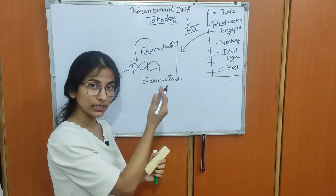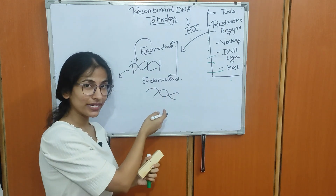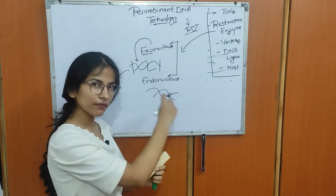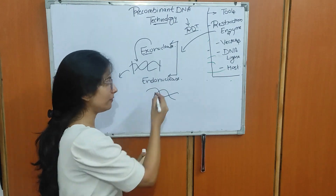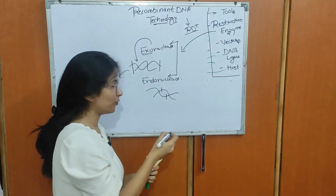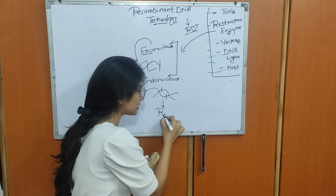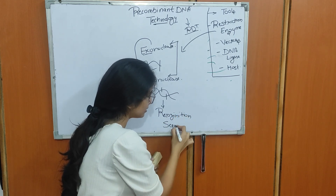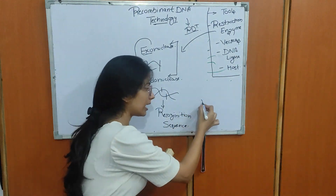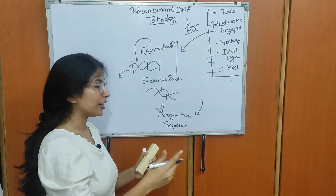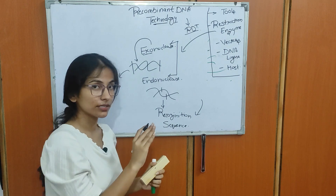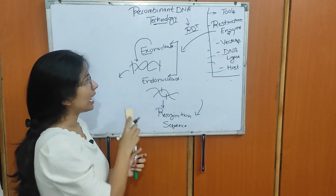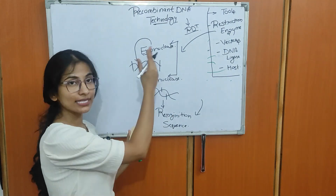On the other hand, endonucleases can cut anywhere in the middle of the DNA, but they require certain sequences called recognition sequences. They will recognize those sequences and cut only on those sequences — nowhere else can the cut be made. These were our restriction enzymes.